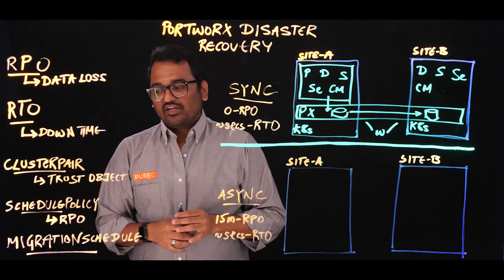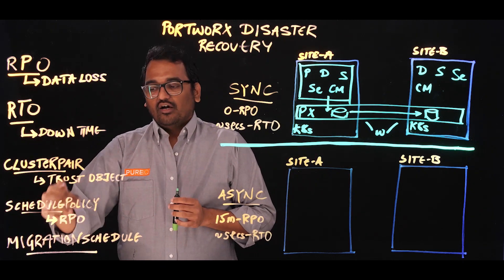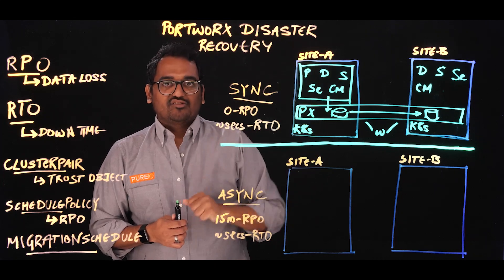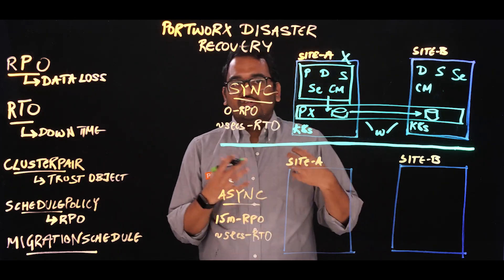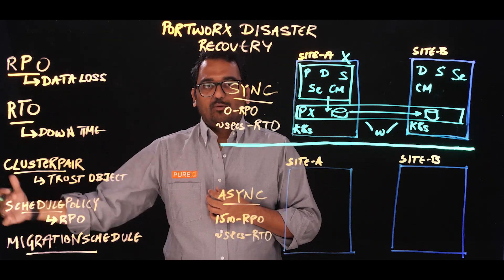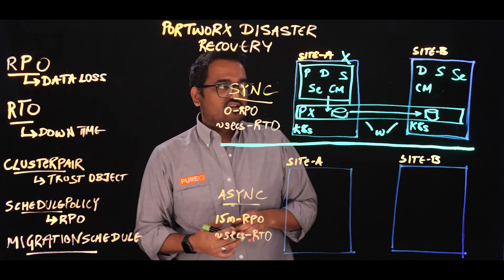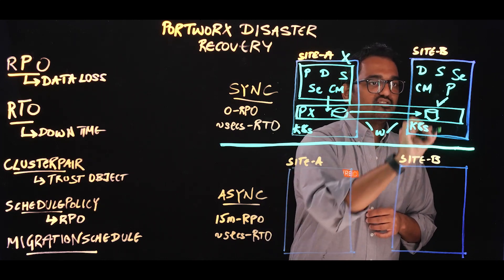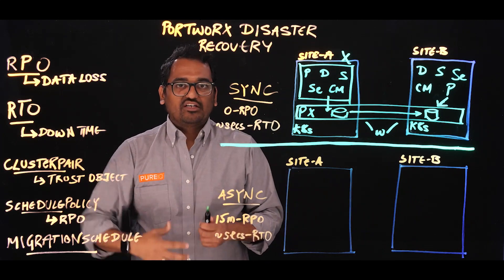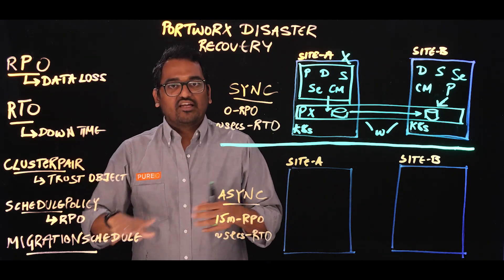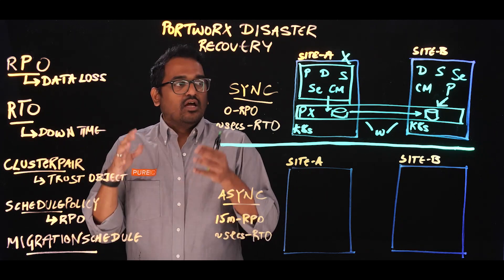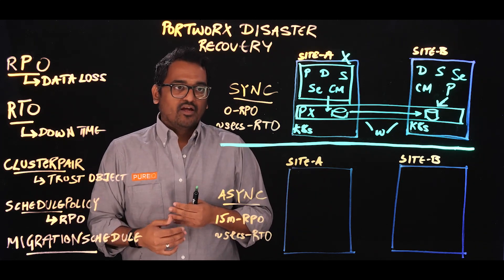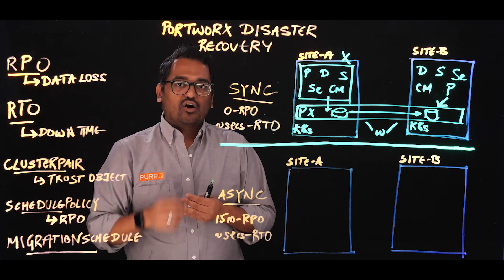Zero RPO from a data perspective — I'll still use a 15-minute or 30-minute schedule policy for all my Kubernetes resources because they don't change that frequently. So when a disaster strikes and my primary cluster goes away, I can use a simple command called storkctl activate migrations to fail over my applications from primary to secondary site. The application pod that was missing on the secondary site now comes online, mounts the persistent volume, and my application is back online. As an administrator, I just log into my secondary Kubernetes cluster, run a simple command, and bring my applications online almost instantaneously. That's how you achieve synchronous disaster recovery with zero RPO and a few seconds of RTO.